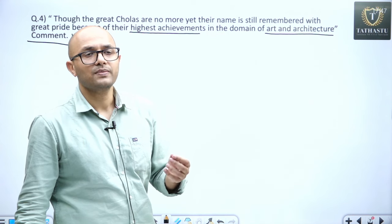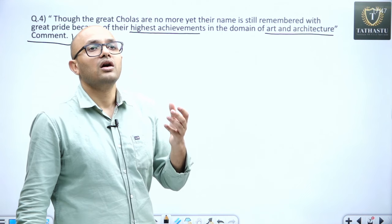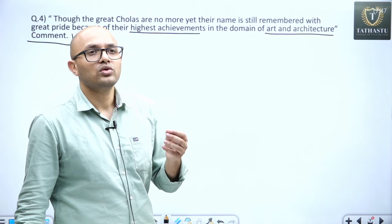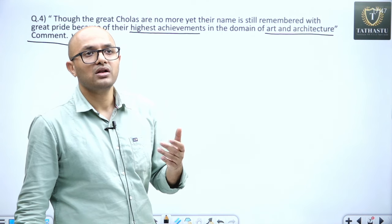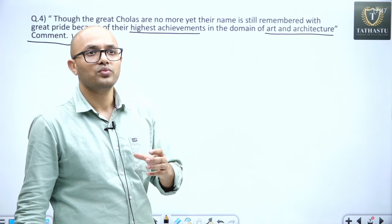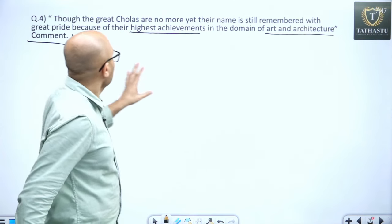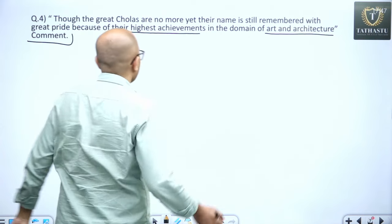bronze, Nataraja, bronze sculpture, Nataraja, sculptures on the walls of temple, height of temple, height of Vimana, Gopuram, we will see, highest achievement domain of art and architecture.